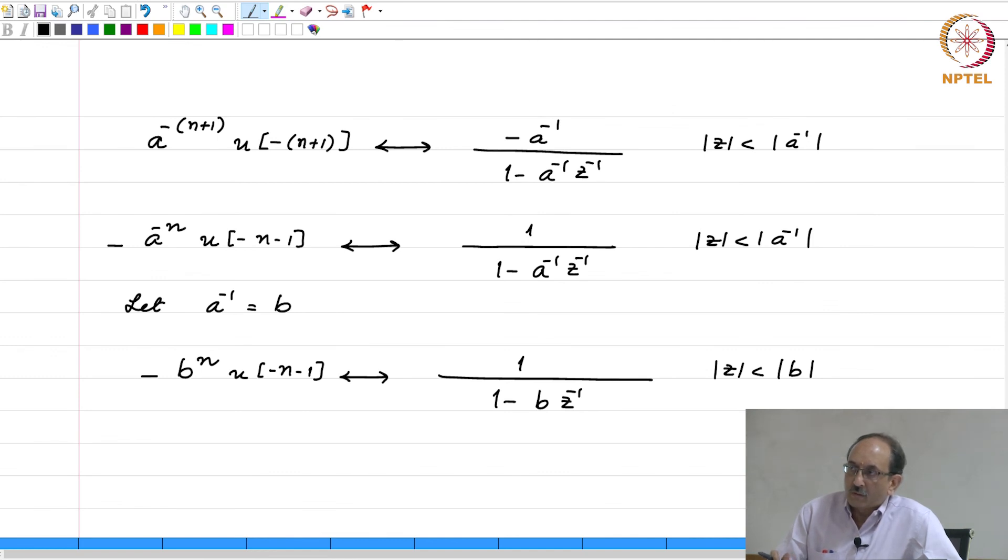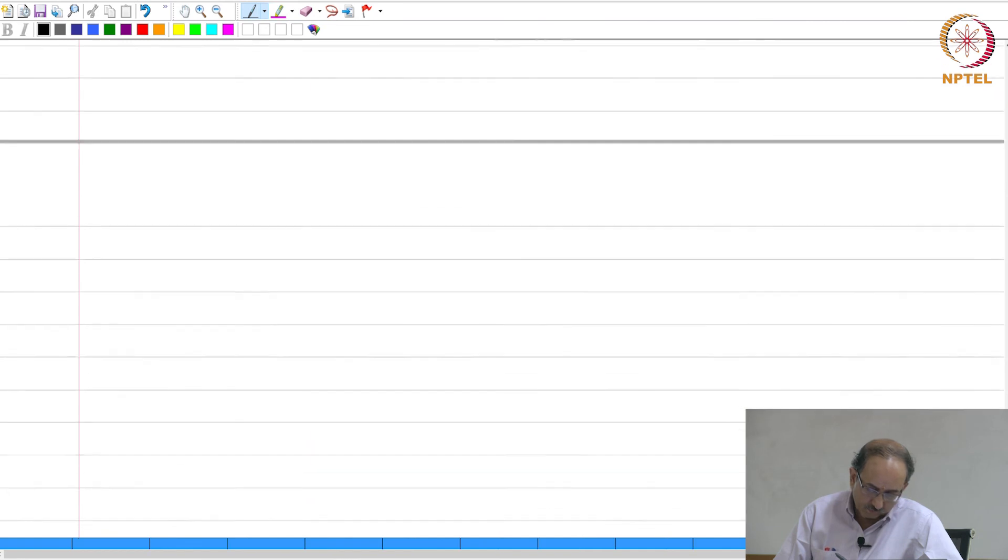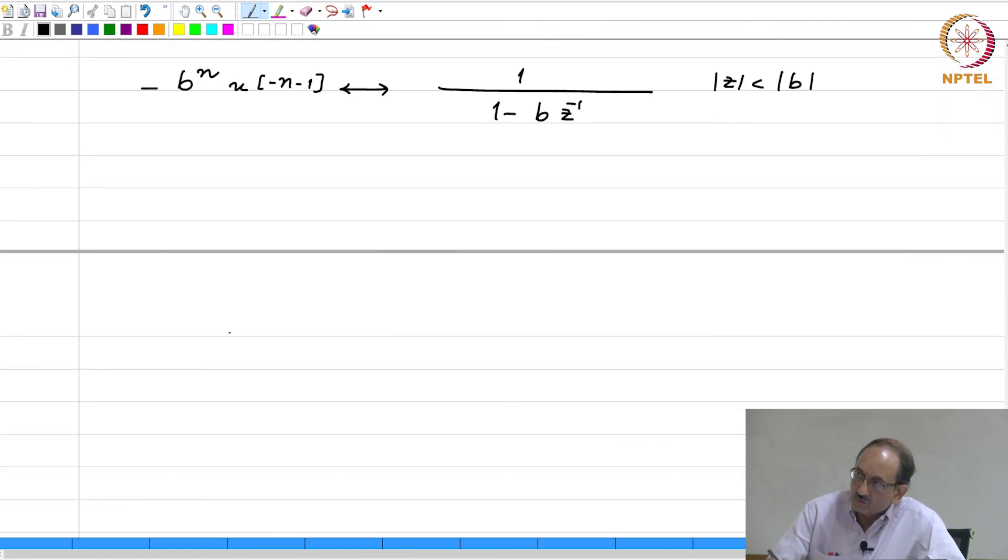Note that time reversal causes a causal sequence to become anti-causal and vice versa. If x of n were causal, x of minus n is anti-causal. Also notice this difference between these two properties: you had minus 1 to the n x of n, this is x of minus z, whereas x of minus n is x of z inverse. Time reversal causes a causal sequence to become anti-causal and vice versa.